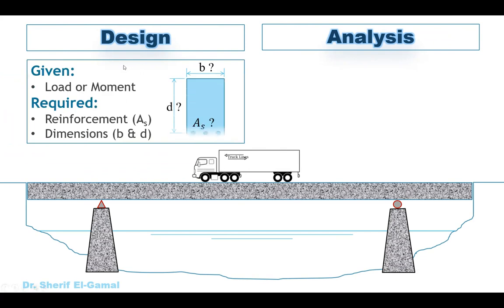In the design, the cross-section dimensions will be unknown and the area of the steel will be unknown. The given will be the load — like a truck load — and from this truck load we can calculate the ultimate moment on the cross-section. So the given is the load or the moment, and the required is to get the cross-section dimensions and the area of the steel reinforcement. For design, we did that in our previous video — you can check the video from this link.